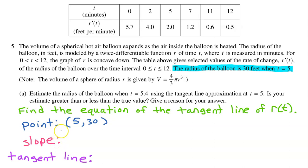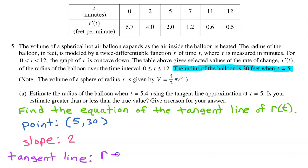Next, we need to find the slope. The slope in calculus is the derivative, and we have a whole chart giving us the derivative at various values of t. They give us r prime at 5, which is what we need — that is the slope, 2.0. Now we can write the equation of the tangent line: r minus 30 equals 2 times t minus 5.